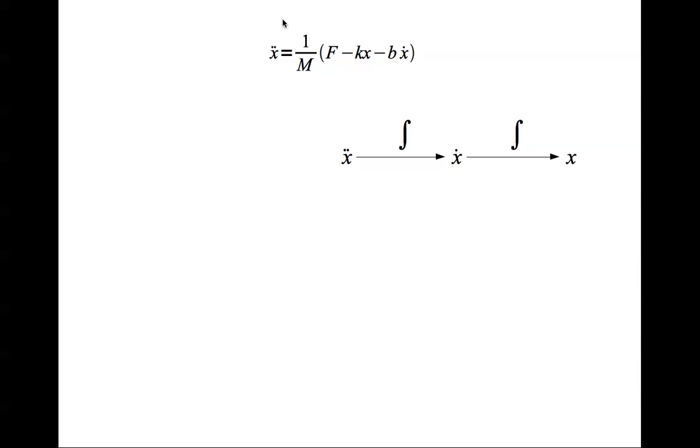Now we need to get this equation somehow. So let's multiply x by k. Next we will multiply x dot by b. Sum them, that's this much here.